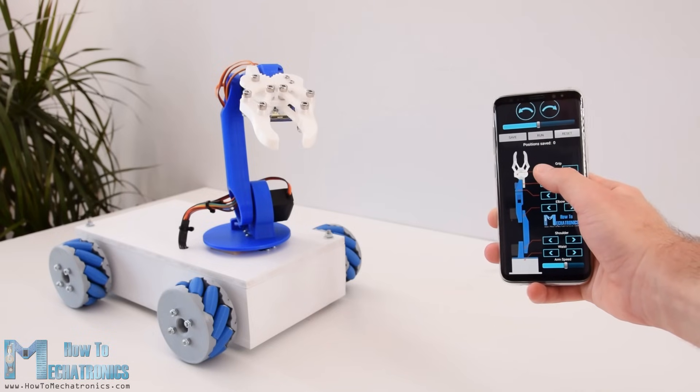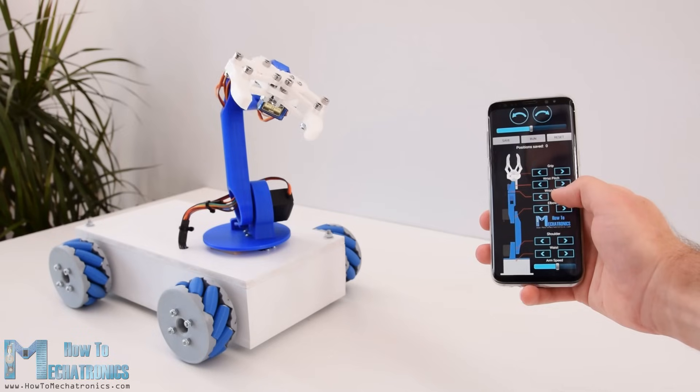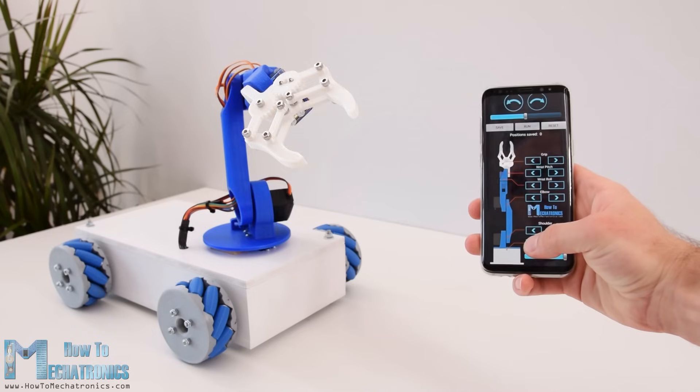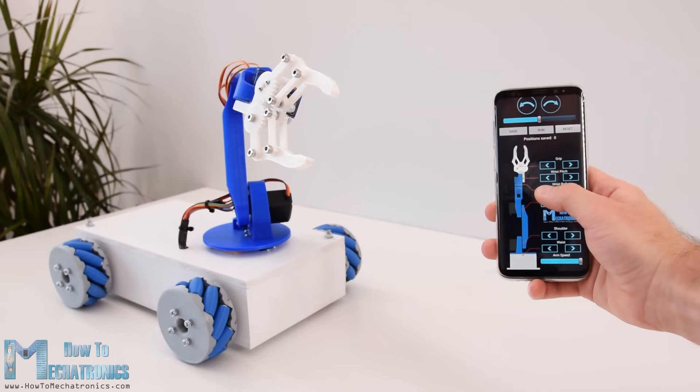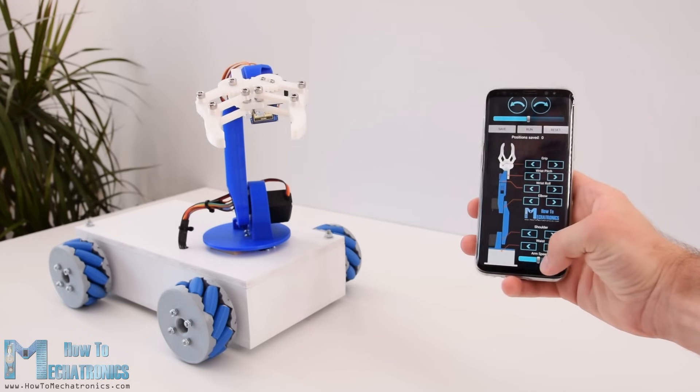The original Robot Arm Control app actually had sliders for controlling the robot joints, but that was causing some problems with the arm stability. In this way the arm works much better, so therefore I will provide this updated version of the Robot Arm Control app and the Arduino code to the original Robot Arm project as well.